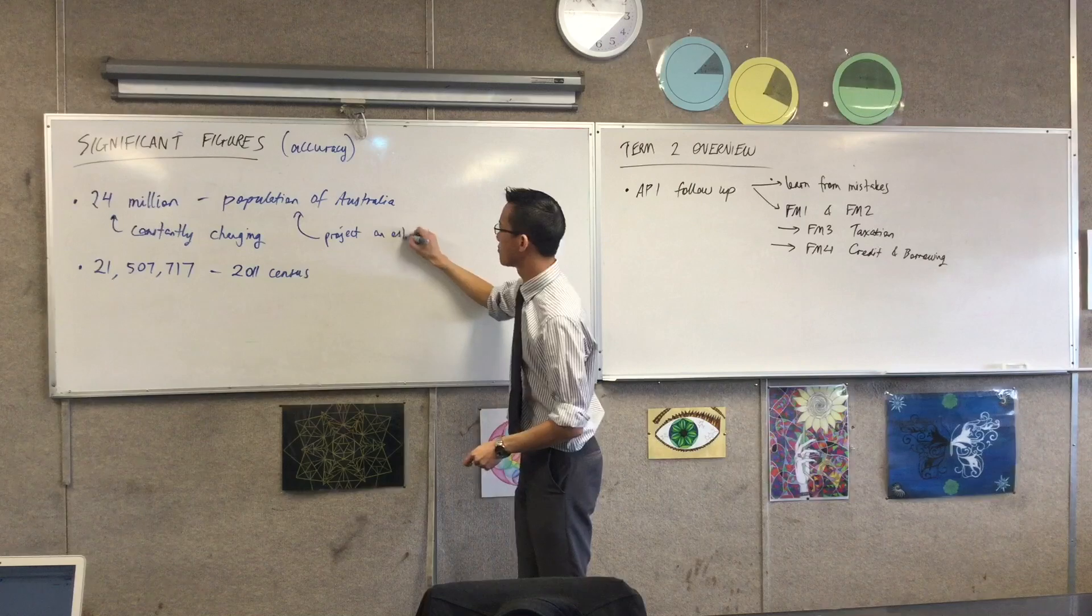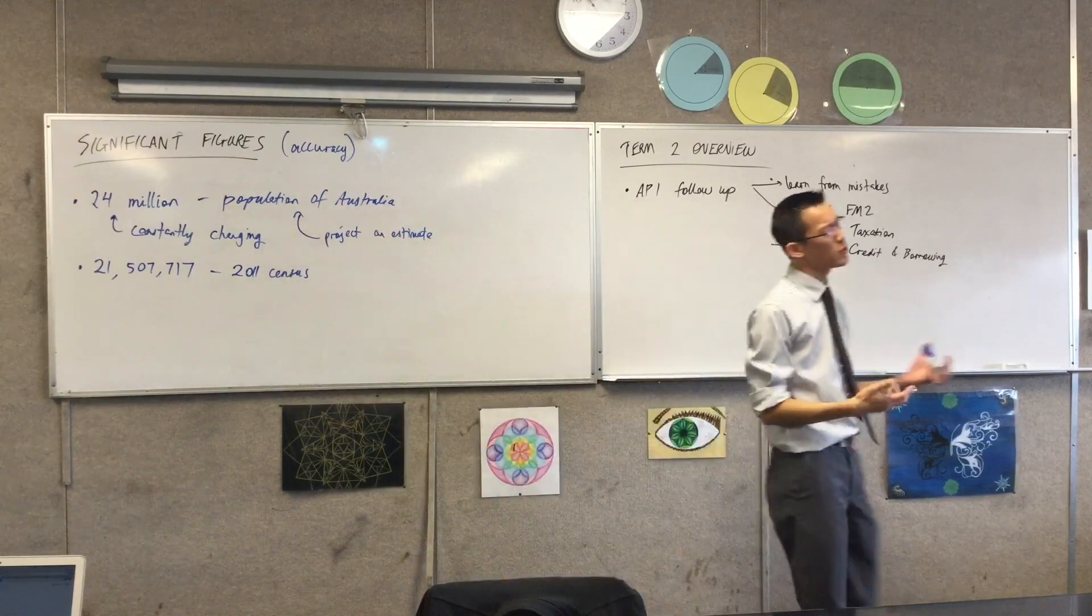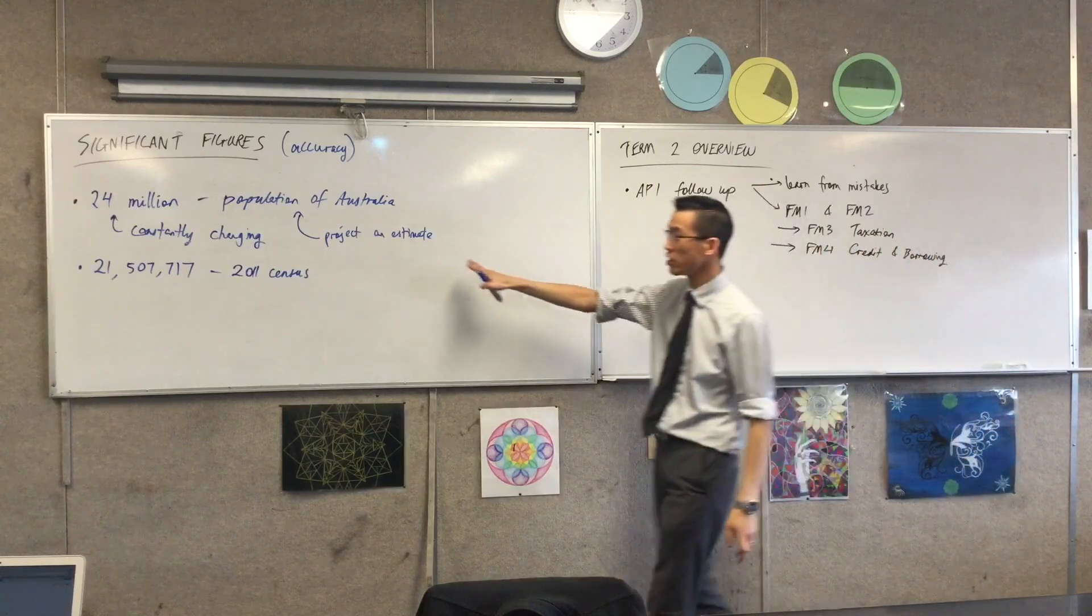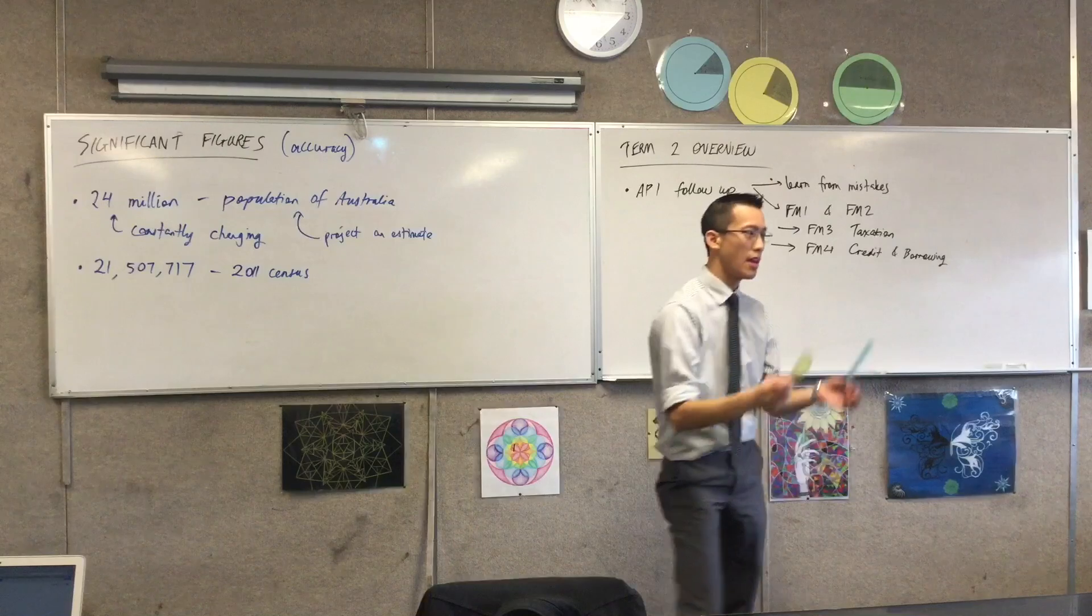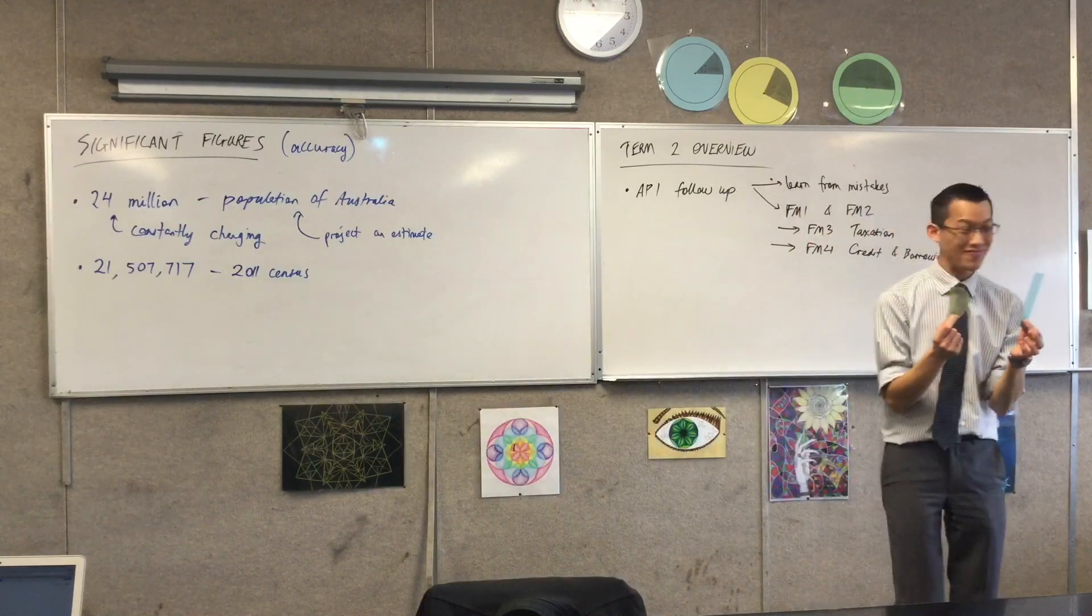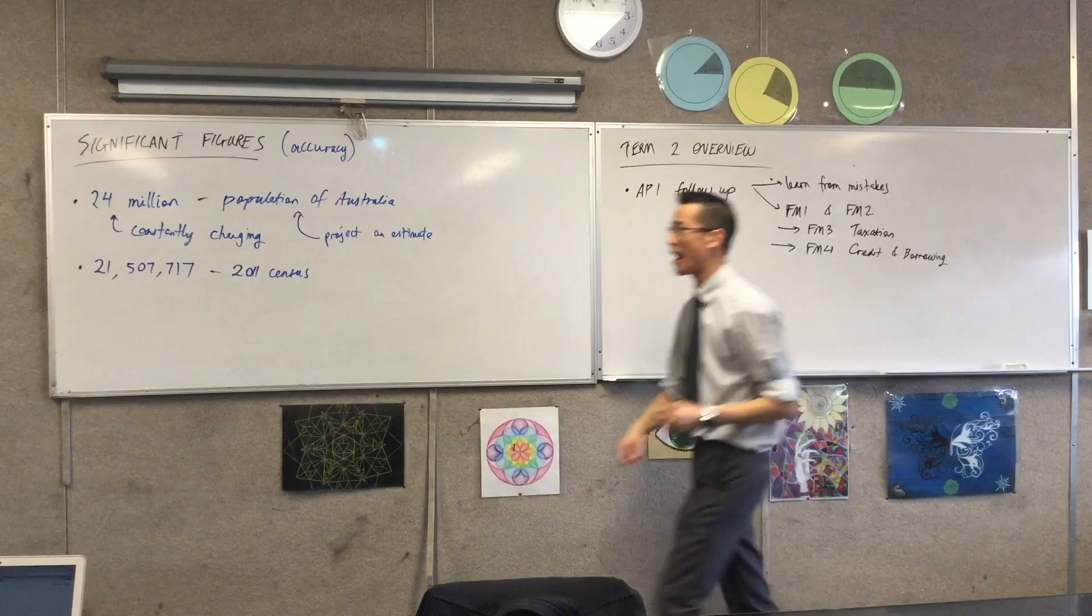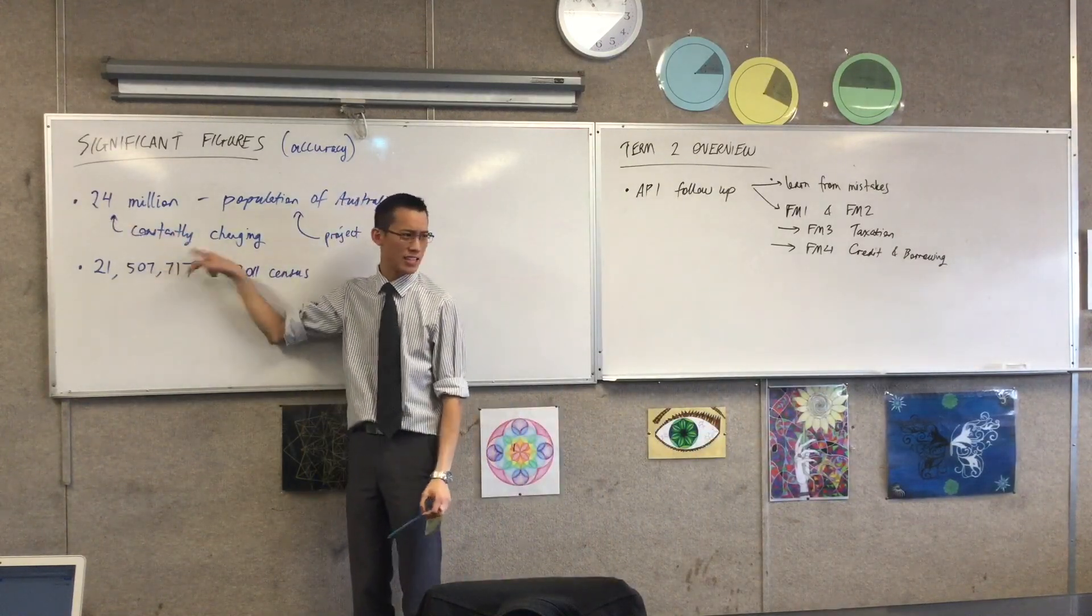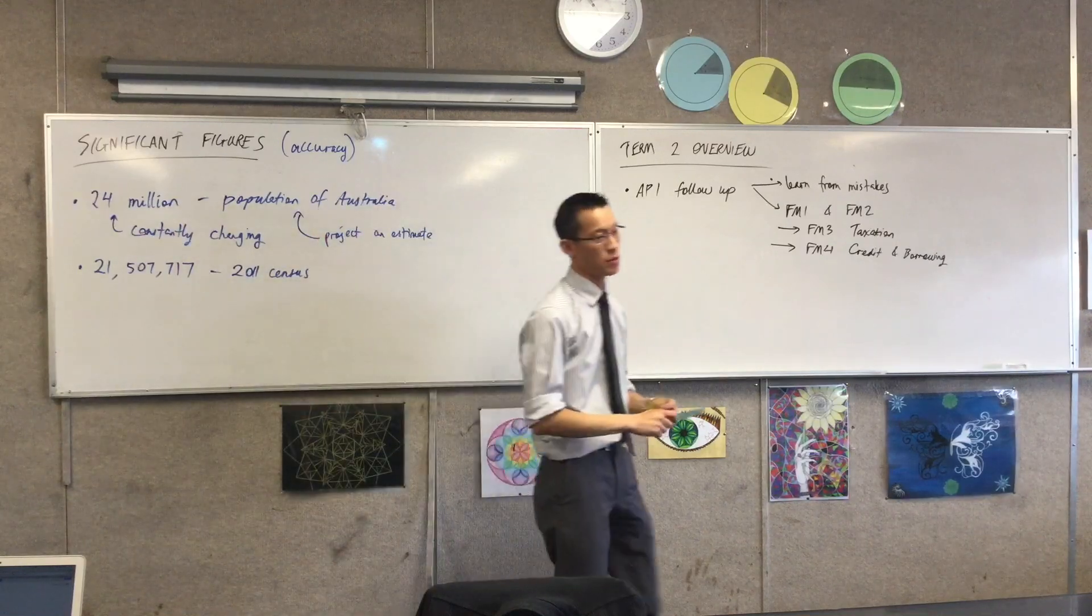But, you look back, right? And, what you do is you project an estimate. Now, we know, because there are all these crazy little variables that we can't ever know finely detailed, we know that this is going to be close. But, as a measurement instrument, like this, as a measurement instrument, it's a little bit blunt. It's not that detailed. And, so, that's why they don't say 24 million, and 300,000, and 92, or whatever it is. They just say, look, that's roughly it. That's about as accurate as we know.